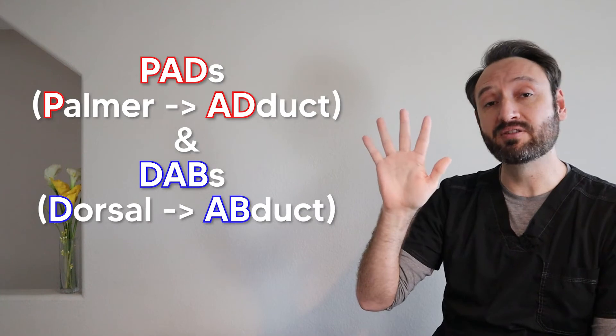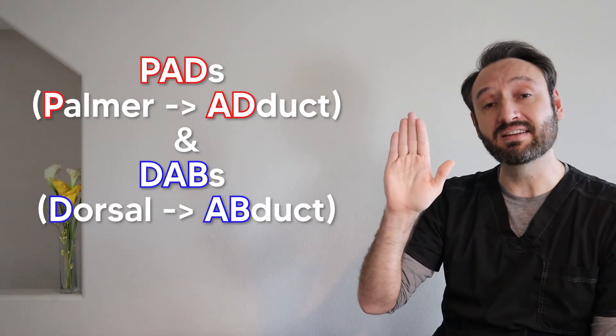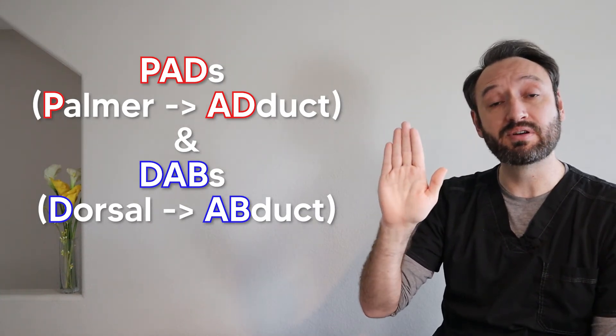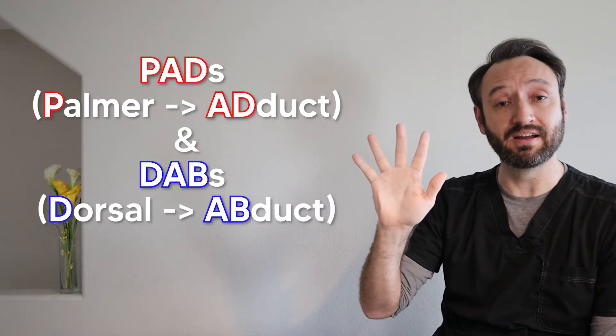An easy way to remember what each one does is with the mnemonic pads and dabs. So the palmar interossei, the P there, adducts the fingers while the dorsal interossei, the D, abducts the fingers.